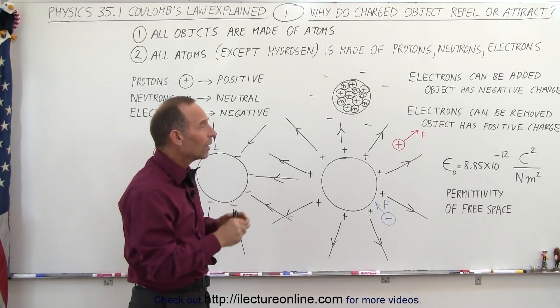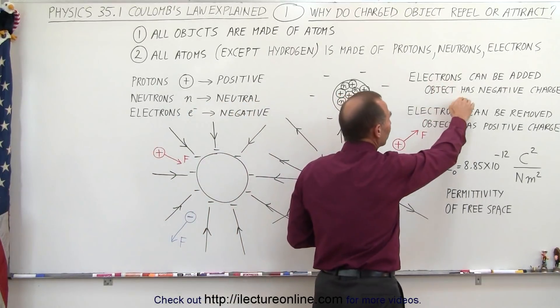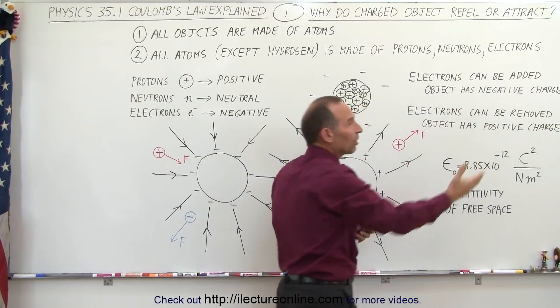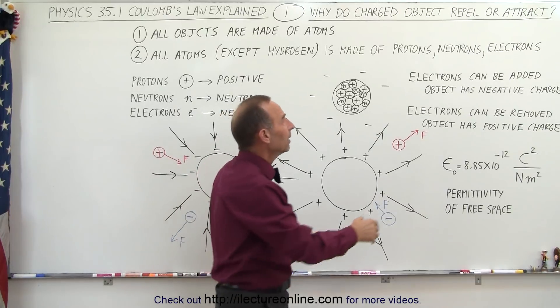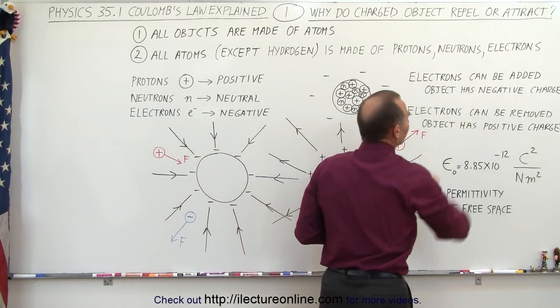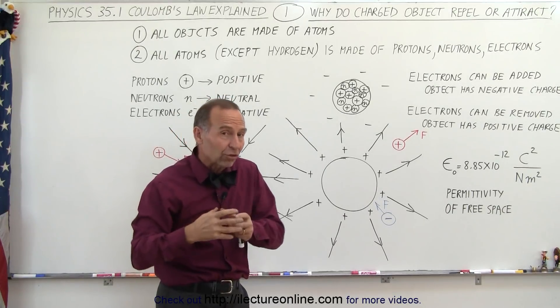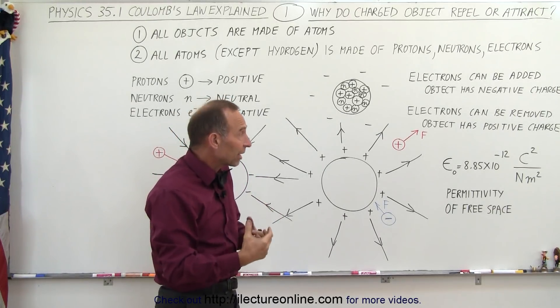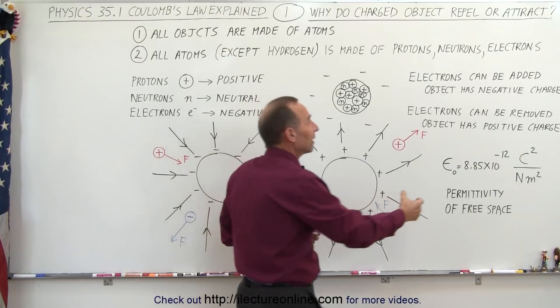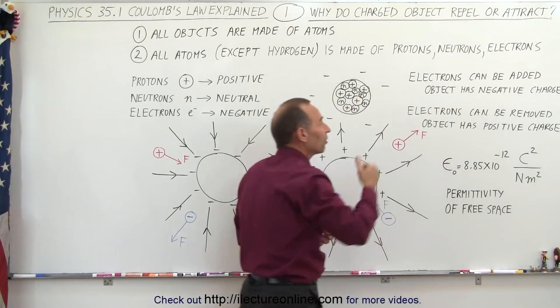The protons are locked in the nucleus of the atoms and they can't be moved, so the electrons can be moved around. So you can add electrons to an object, and if you do, if there's more electrons than there are protons, then that object will become negatively charged. If you remove electrons so now there's an excess of protons versus electrons, then the object has a positive charge.